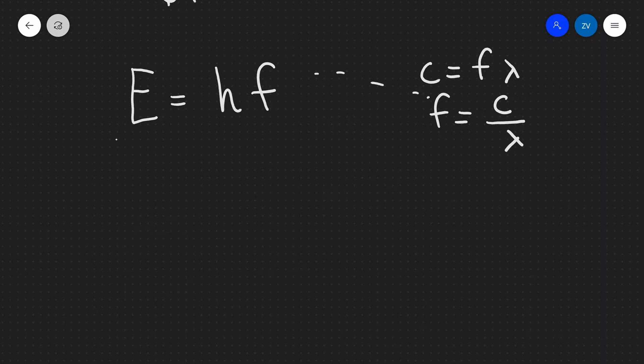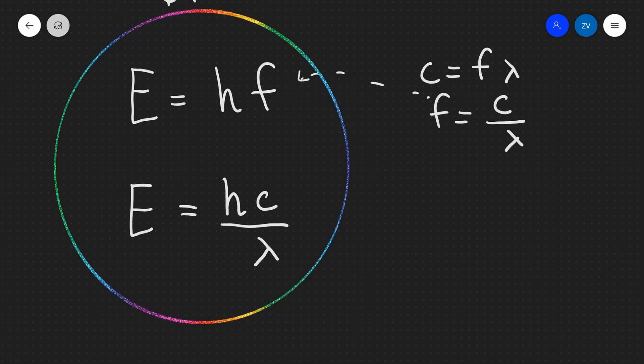And if we were to just substitute that back into the original equation, we're going to get the second equation that we're going to use. And this is that E is equal to hc over lambda. And those are the two main formulas that we are going to be using to calculate the energy of individual photons.